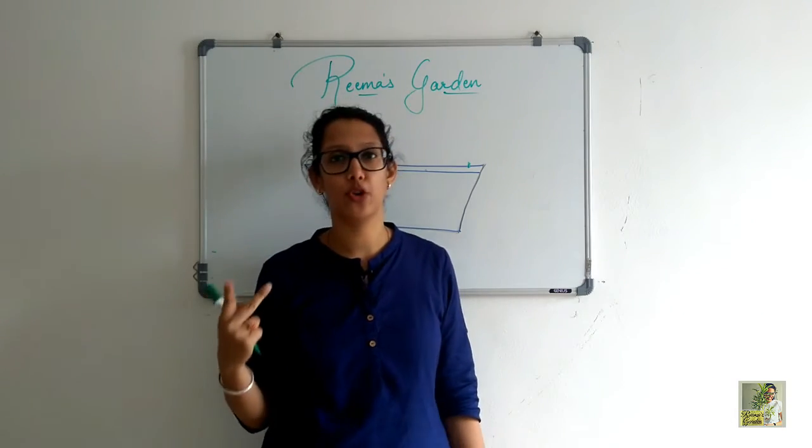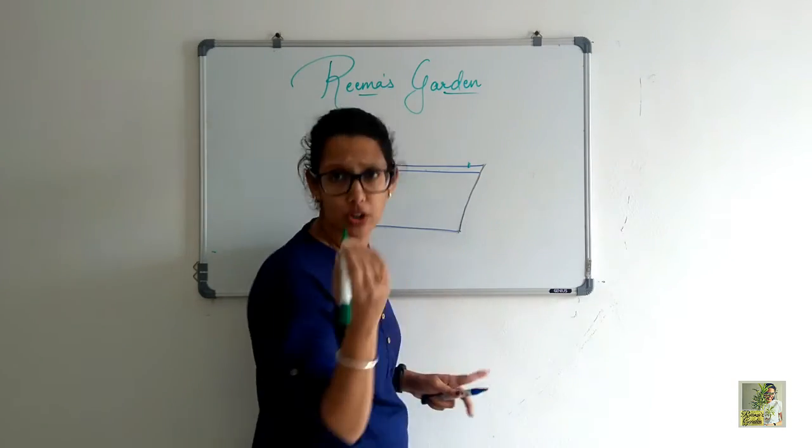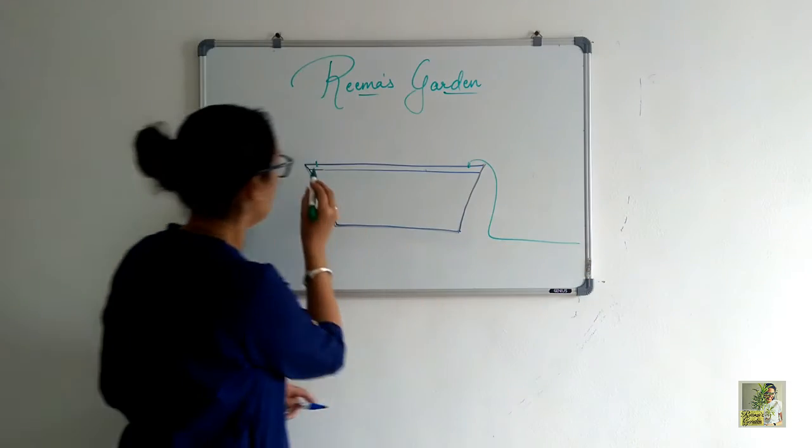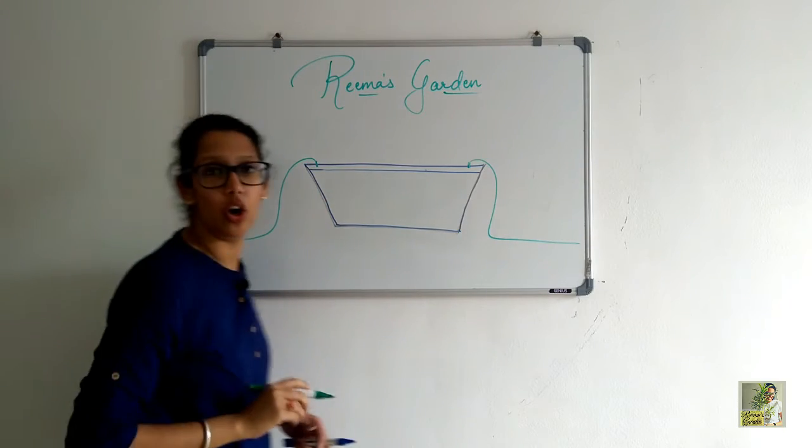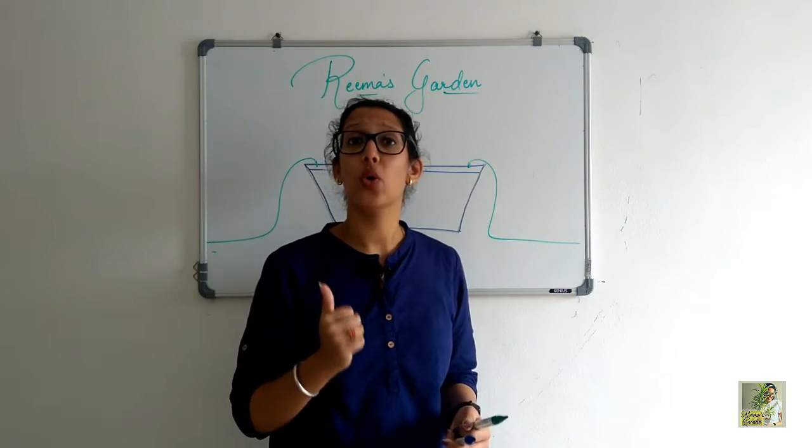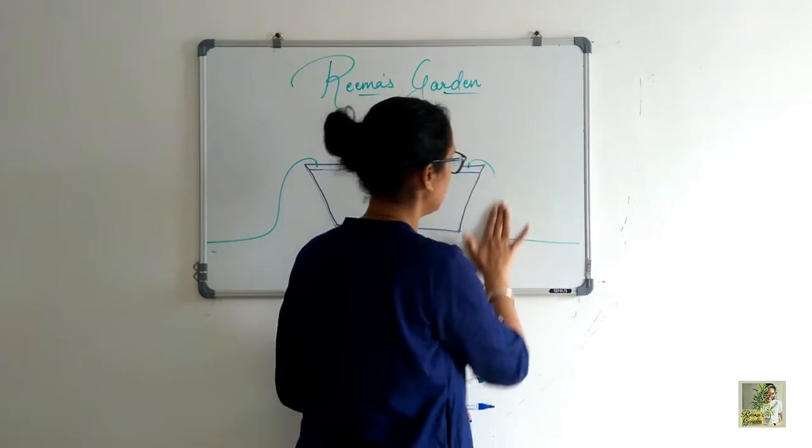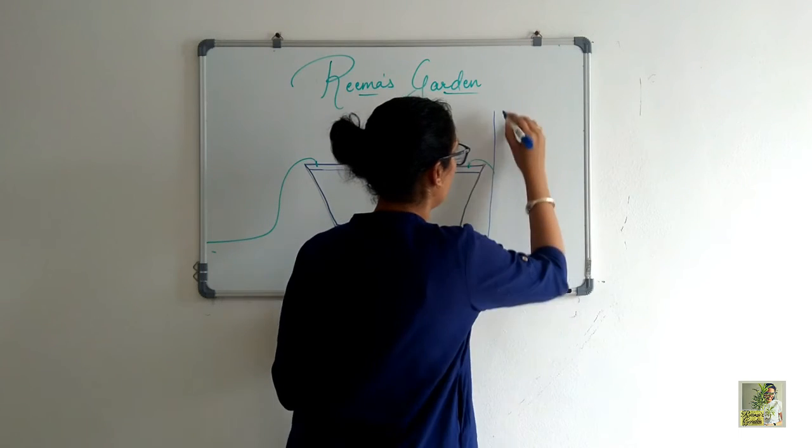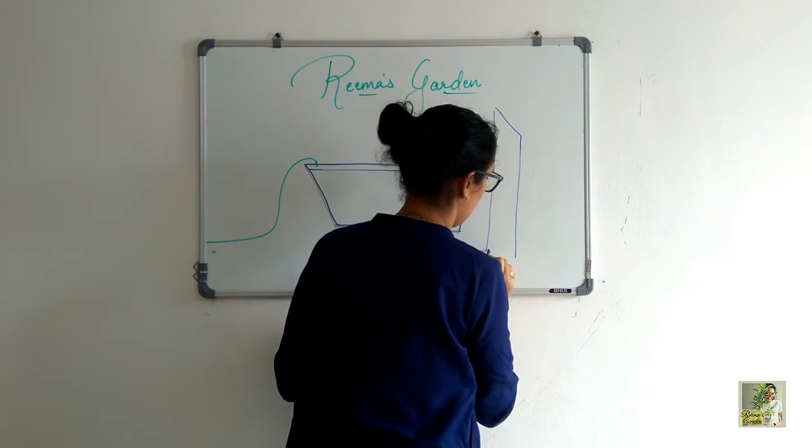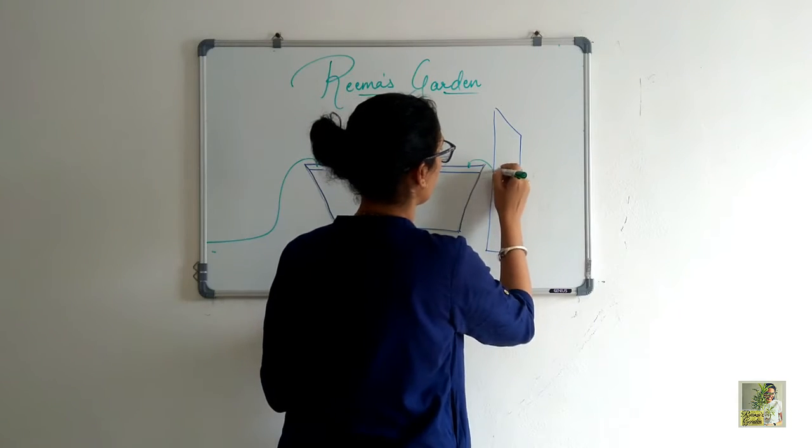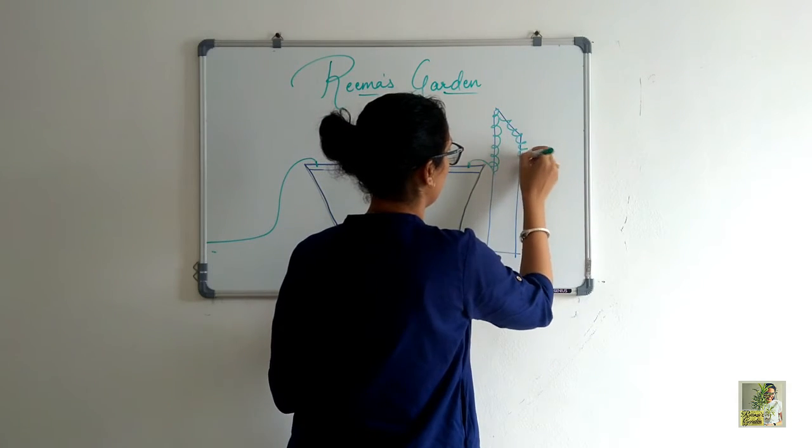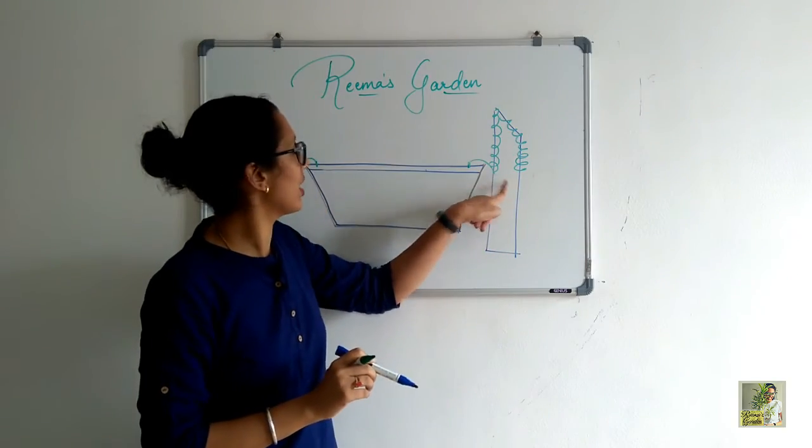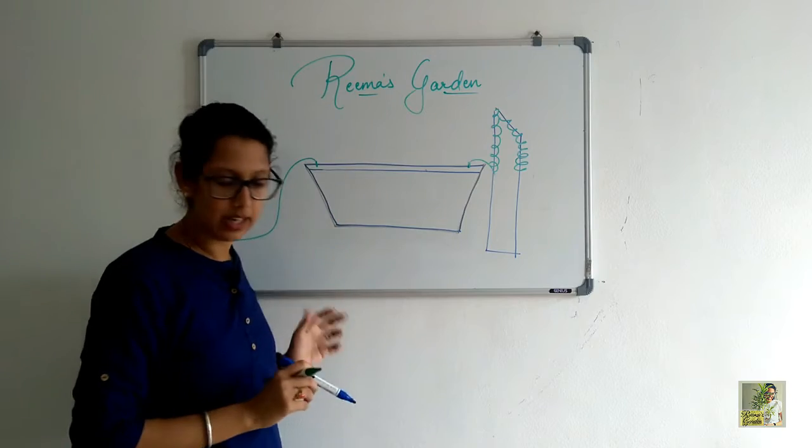You can just let them overflow and grow on the ground, or the second option is you have a trellis that is placed here, and the plant grows on the trellis like this. So you have two options: either grow it on a trellis or let the plant overflow.